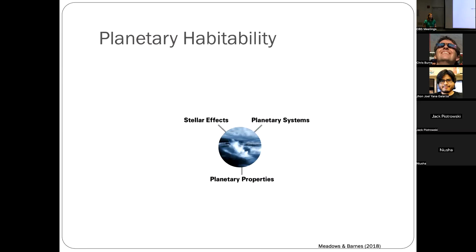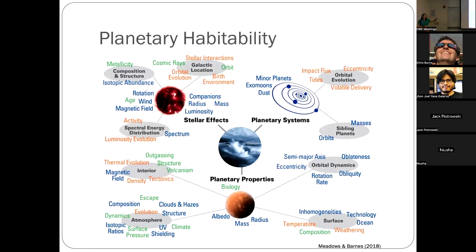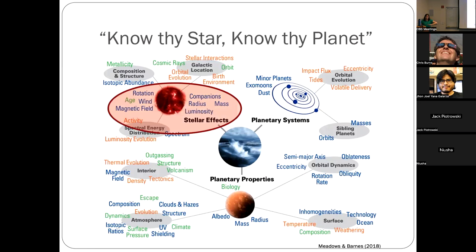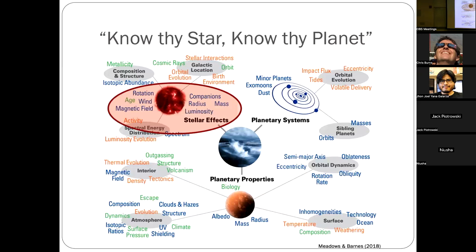Going back to the question of are we alone, we're really trying to follow the water — we know that life on Earth requires water to survive. But this is not as simple as it sounds; you have to consider the effects of the star, the effects of other planets in the system, and then the planet itself, before you can even ask whether there's water. I call this figure 'know thy star, know thy planet,' and today I'm going to focus on stars — specifically activity, rotation, and intrinsic properties like luminosities and radii.